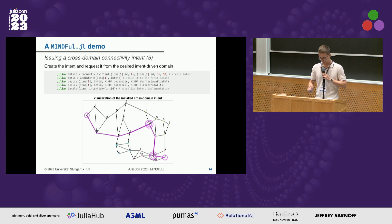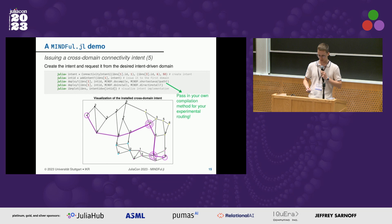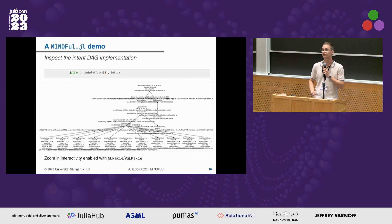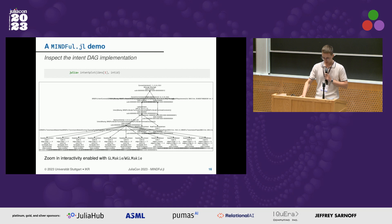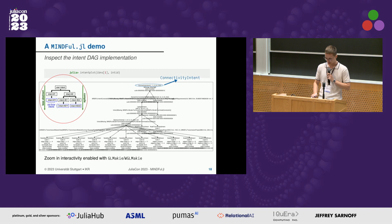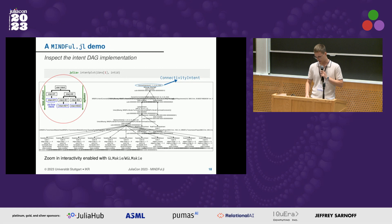The most important part of this code block is the intent compilation algorithm. Here we use the shortest available path, but you can pass your own compilation method for your own experimental routing. You can also inspect the DAG that has been generated by your intent compilation algorithm for the specific intent. This should ring the bells from the theoretical picture, where the root intent is the connectivity intent we created, and all the leaf nodes are resource allocations like fiber spectrum allocation, transmission module allocation, modulation, and so on.